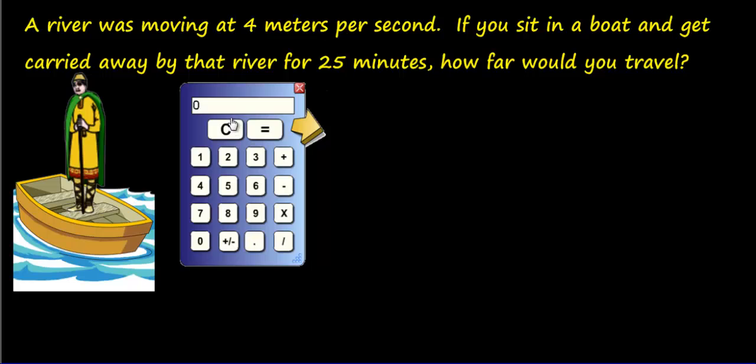Some of you have gone canoeing or boating in a river. Here we have a river was moving at four meters per second. Mr. Melham, you said that a ratio is a comparison of two different things. I only see one number here. It's just four meters per second. That's a very good point. But the word per means for one second, for one second, every single second. So we still have two numbers. If you sit in a boat and get carried away by that river for 25 minutes, how far would you travel?